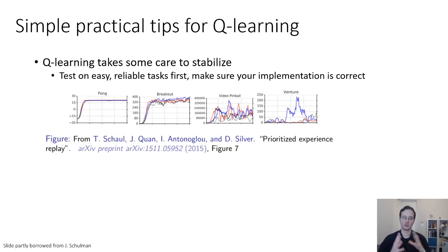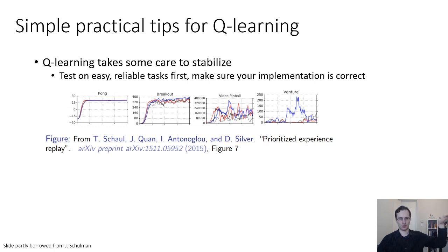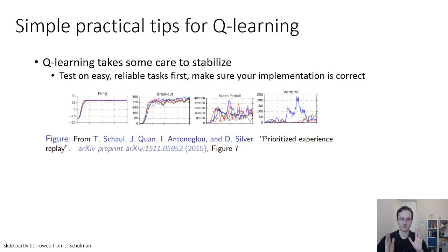Q-learning performs very differently on different problems. These plots of DQN-type experiments on various Atari games show a huge difference in stability. For Pong, reward steadily goes up and flatlines. For Breakout, it goes up and wiggles a lot. For harder games like Video Pinball and Venture, it's completely all over the place. The different colored lines represent different runs with different random seeds. For Pong, different seeds are basically identical; for Venture, some runs work and some fail completely.